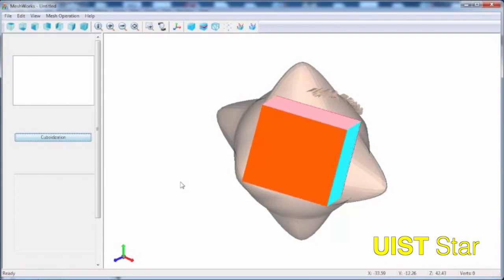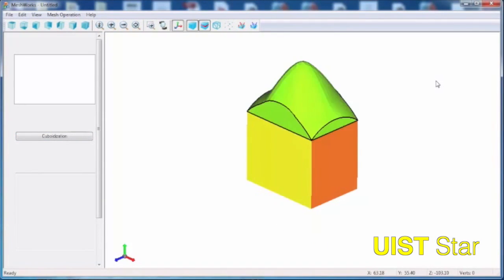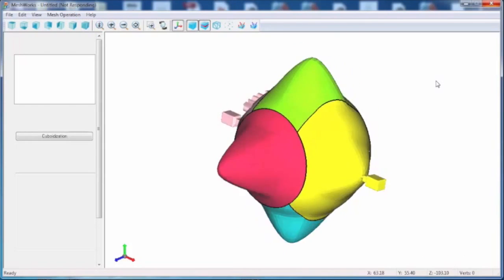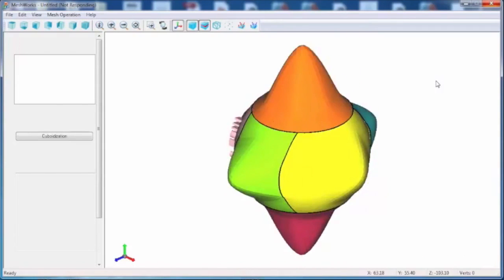We propose an optimization algorithm called cuboidization to generate a cuboidal enclosure which is also a printing base and inscribed within a desired shape.